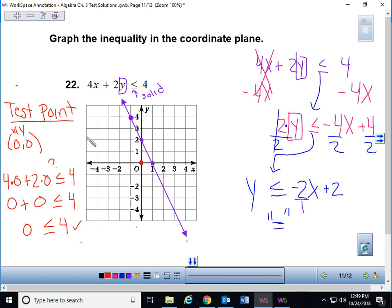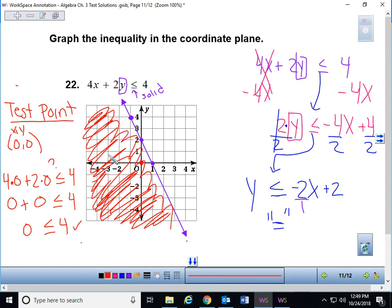And that is definitely less than 4. So that means any point that falls below, any coordinate point that falls below our line works. I'm going to shade all this. It doesn't have to be super pretty. You can see I'm kind of just shading enough so you can tell. Well, that is your final answer.